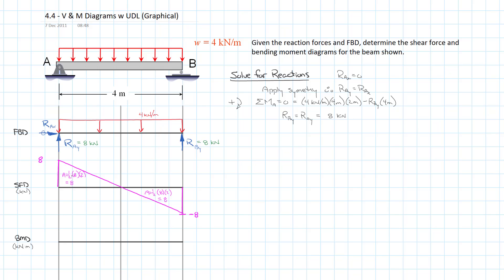The area under the shear force diagram equals the change in moment. Between point A and midspan, the change in moment is positive 8. In the second half, between midspan and point B, we have an area of negative 8, which takes us back to zero. So we know three points on our bending moment diagram: zero at both ends and 8 at midspan.